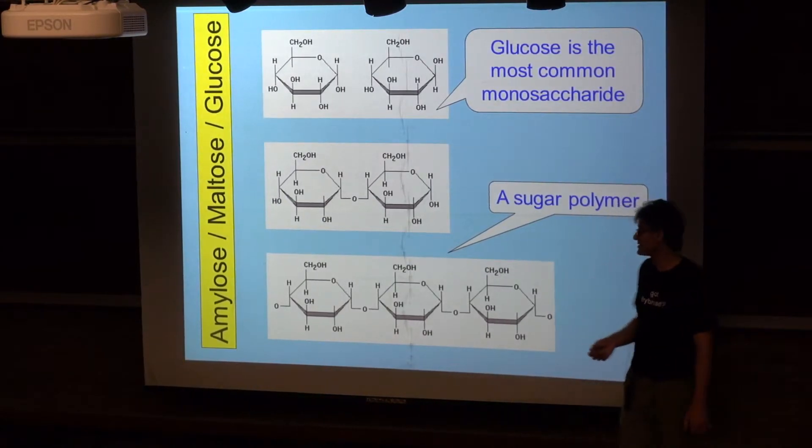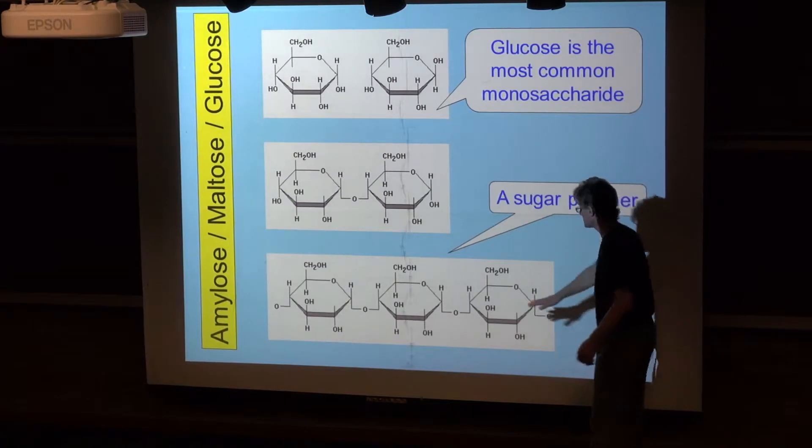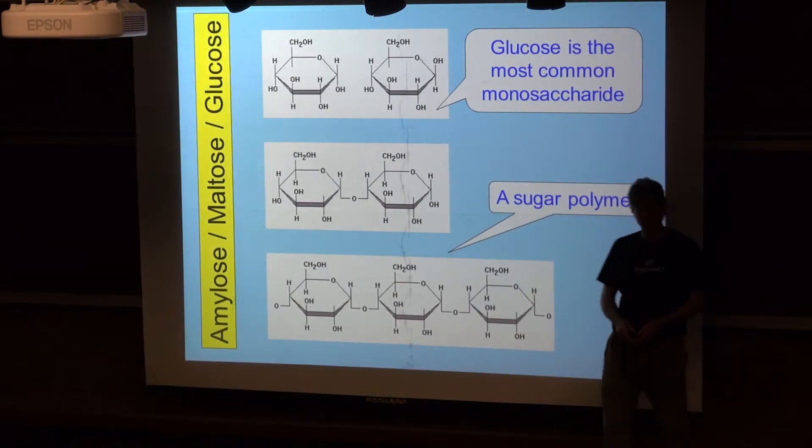And this starch in particular, if it's just a linear chain that keeps going and going and going, is called amylose.